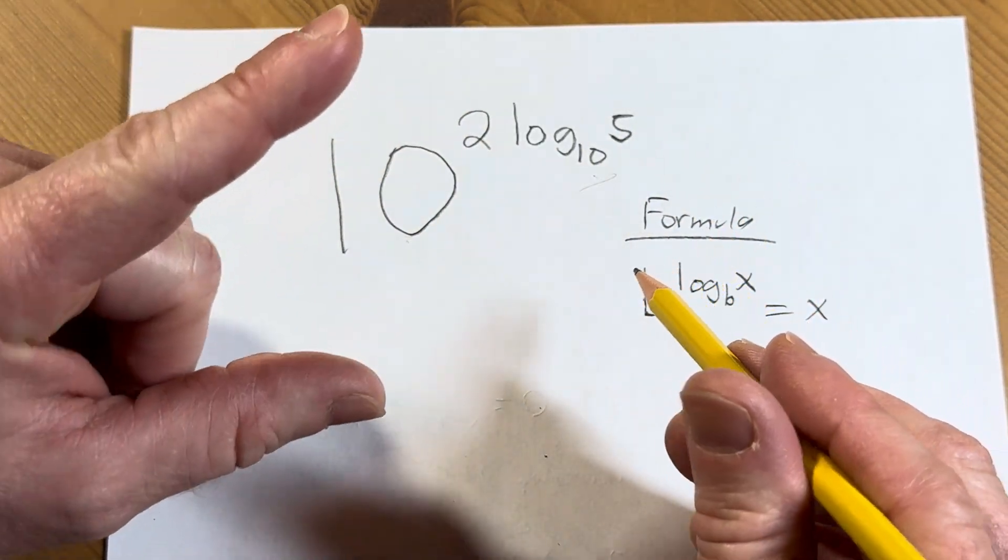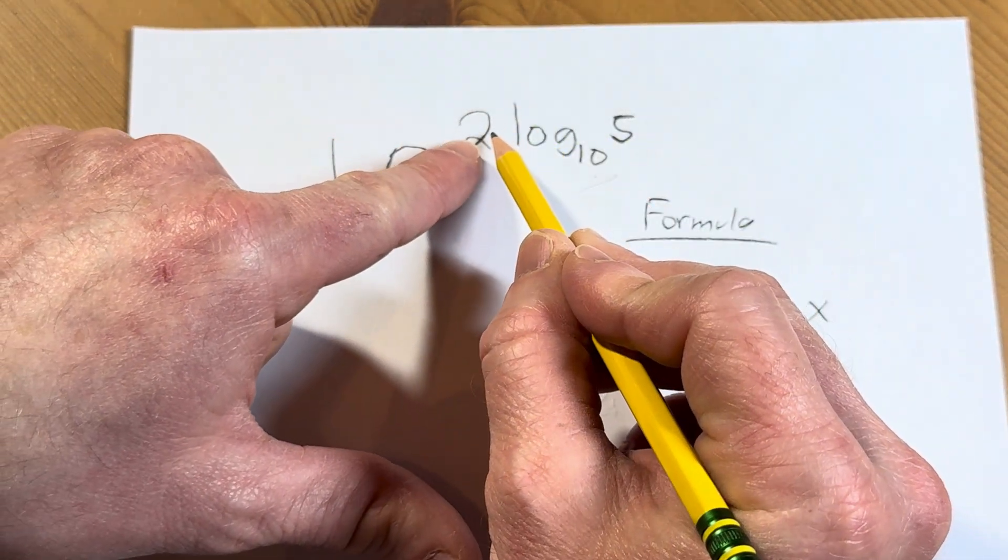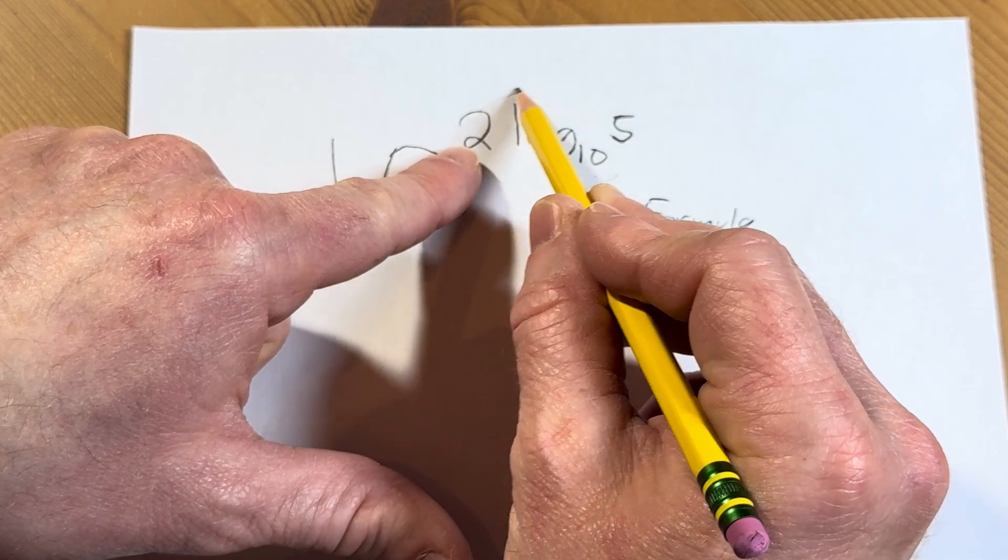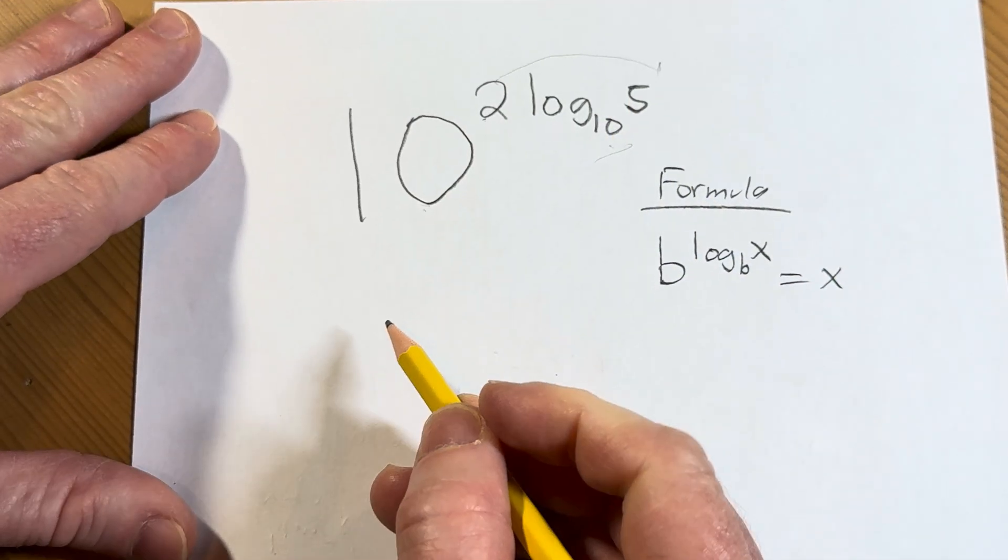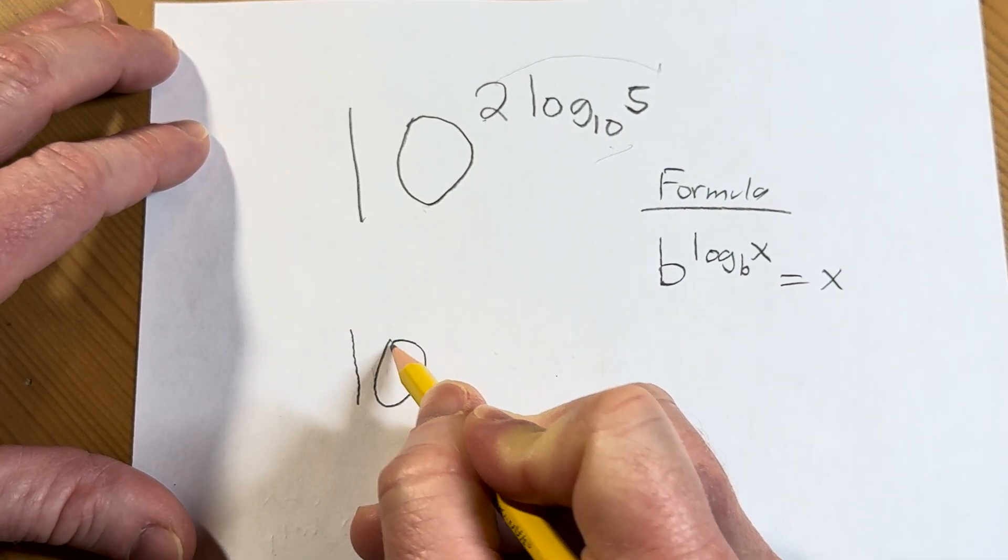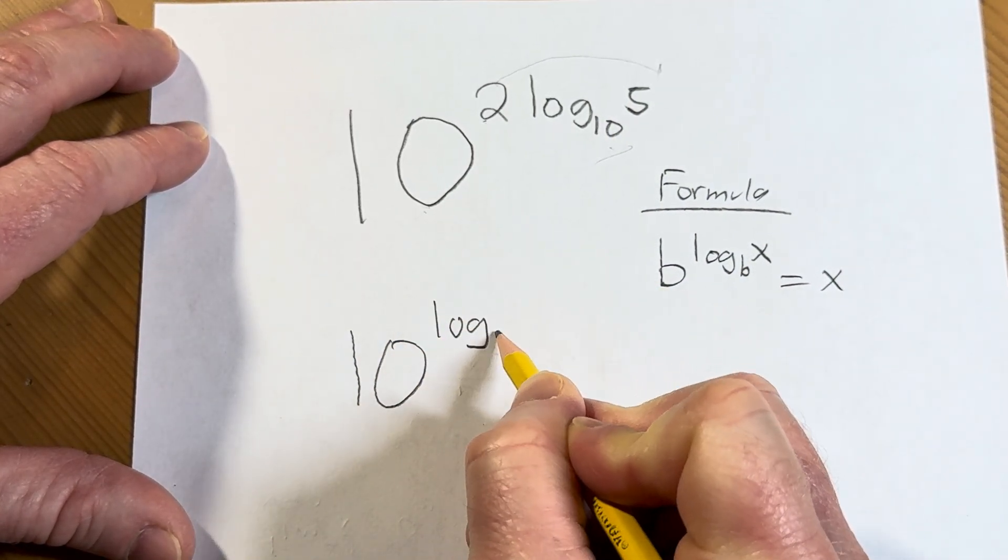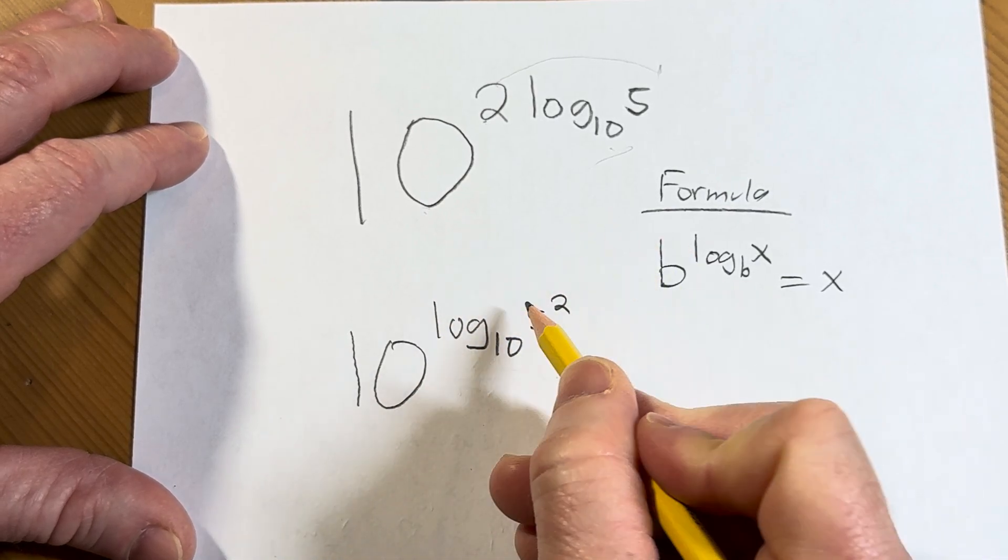Well, there's something called the power rule. The power rule says if you have a number in front of a log like this, you can just bring it upstairs. So step 1 is going to be to take this 2 and bring it upstairs. We're going to write this as 10 to the log base 10 of 5 squared, like that.